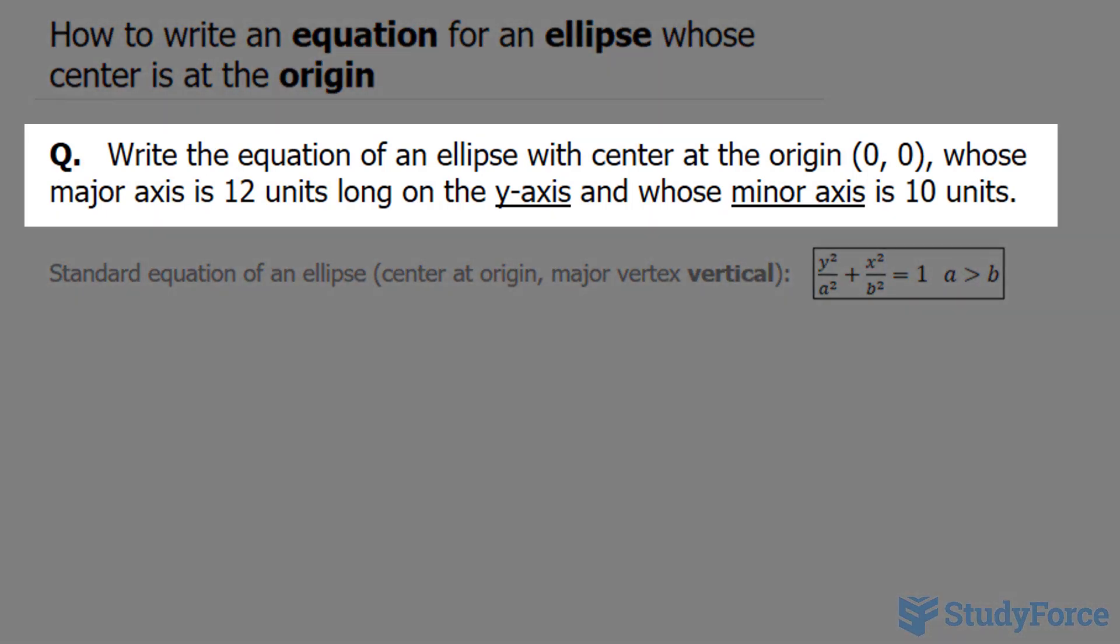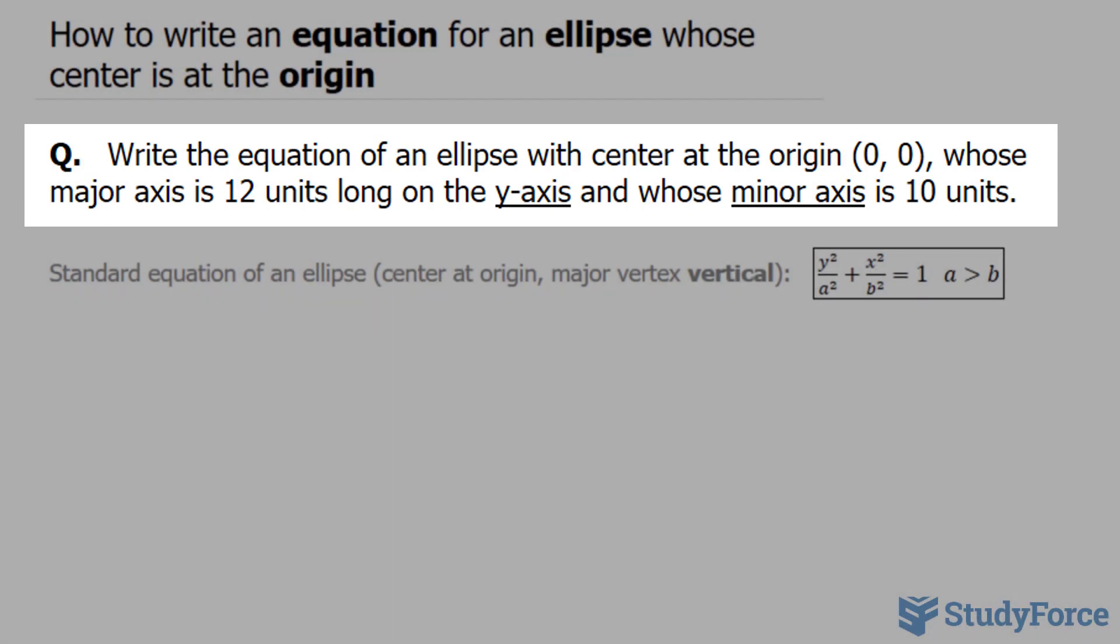The question reads: Write the equation of an ellipse with center at the origin (0, 0) whose major axis is 12 units long on the y-axis and whose minor axis is 10 units.